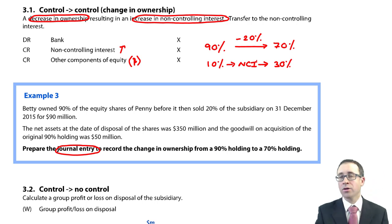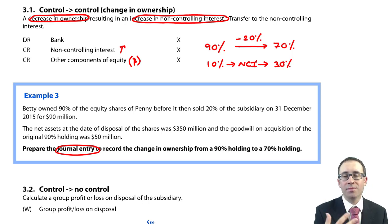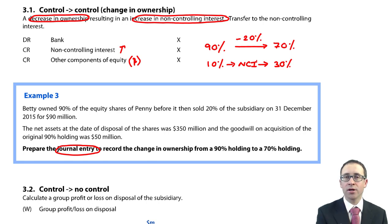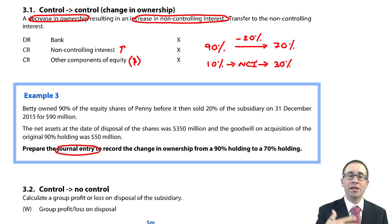So the non-controlling interest owned 20% more of the assets and liabilities and 20% more of the goodwill. So what we've got there is in order to work out the change in ownership we need to work out what the assets and liabilities are, what the goodwill is and apply that 20% to it.